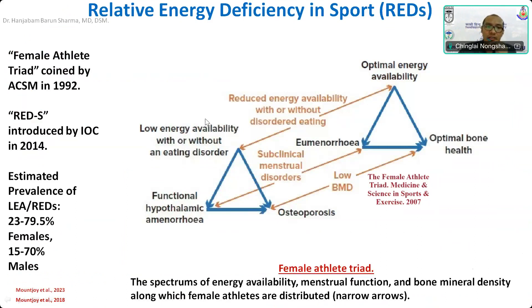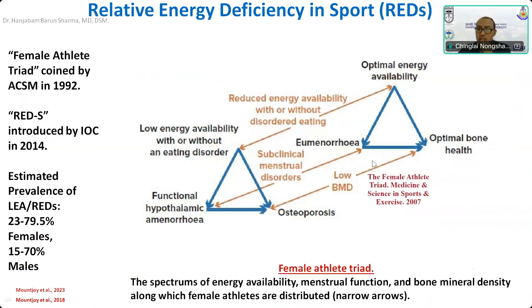REDS was originally identified under the name of the female athlete triad, where the triad comprised low energy availability or eating disorder, menstrual abnormality in the form of functional hypothalamic amenorrhea, and low bone mineral density, osteoporosis, or stress fracture. This is a continuum — a spectrum — from optimum health to the female athlete triad, and the female may present at a different stage of this spectrum. Since it involves other systems as well, REDS was adopted by the IOC starting from 2014. Not only in females — among males also, the estimated prevalence of LEA or REDS may be as high as 15 to 70 percent.